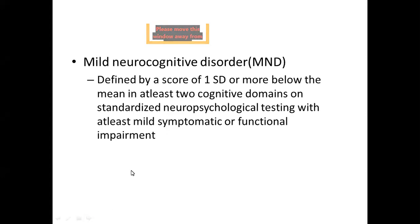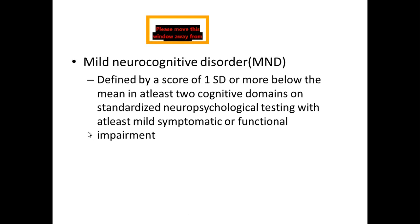Mild neurocognitive disorder is defined by a score of one standard deviation or more below the mean in at least two cognitive domains on standardized neuropsychological testing, but with at least mild symptomatic or functional impairment. So the same degree of score deviation as ANI is present here, but in mild neurocognitive disorder there is a mild symptomatic or functional impairment, whereas in ANI the patient was asymptomatic.